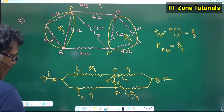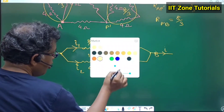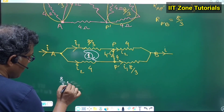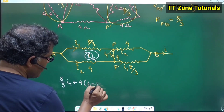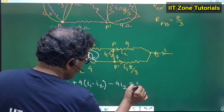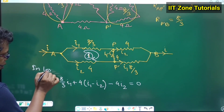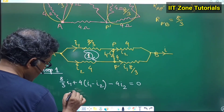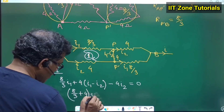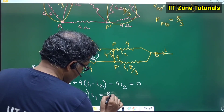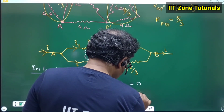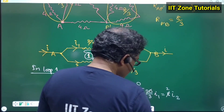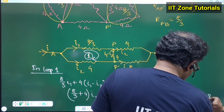Applying the loop rule for loop one in clockwise order: (8/3)i1 + 4(i1 − i2) − 4i2 = 0. Simplifying: (8/3 + 4)i1 = 8i2, which gives (20/3)i1 = 8i2. Therefore the relation between the branch currents is (5/3)i1 = 2i2.